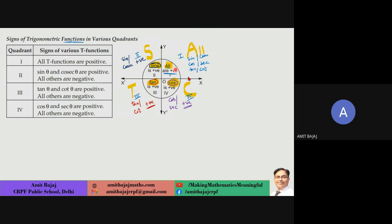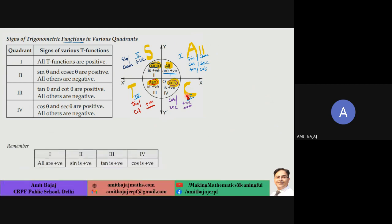We learned the quadrant rule: in the first quadrant, all T-ratios are positive. In the second quadrant, sine and its reciprocal (cosec) are positive, the rest negative. In the third quadrant, tan and cot are positive. In the fourth quadrant, cos and sec are positive.